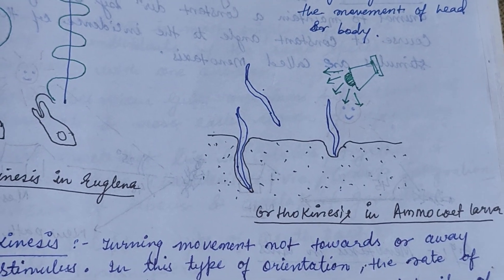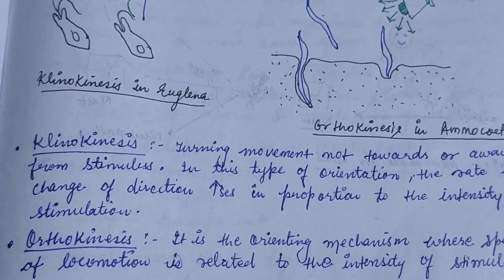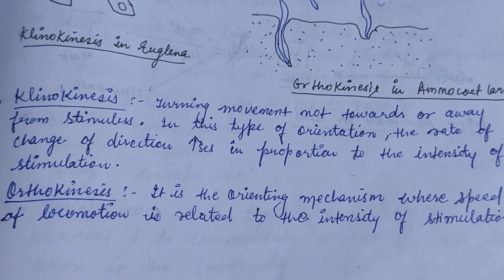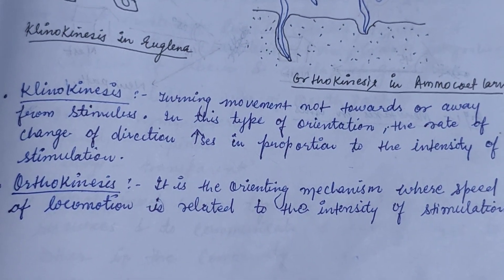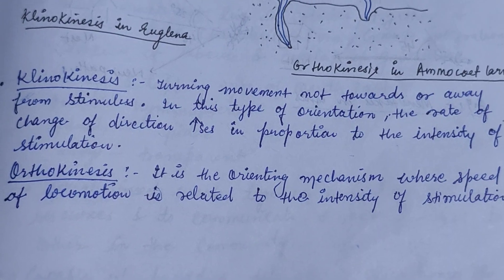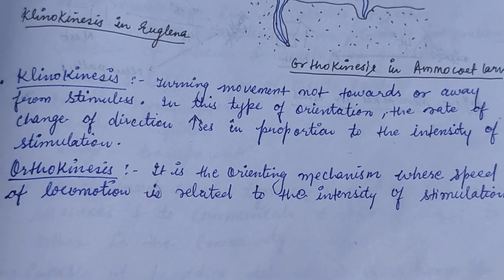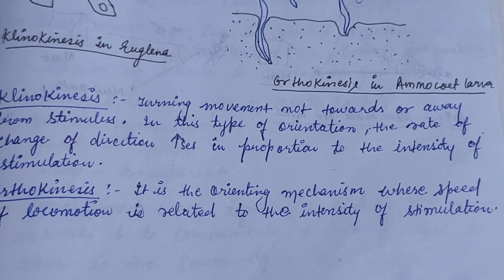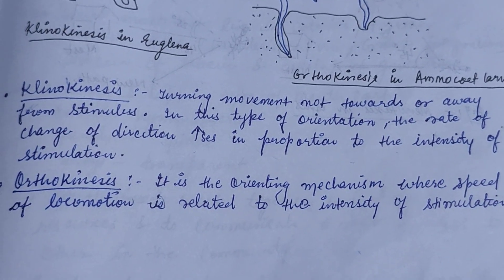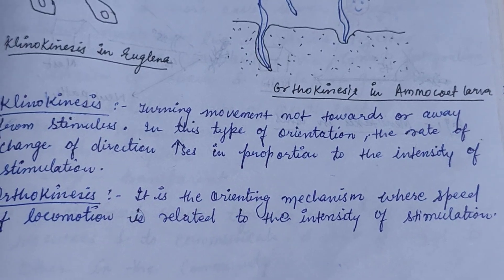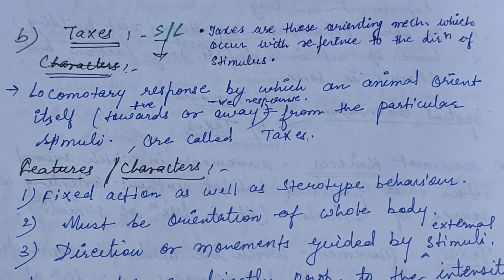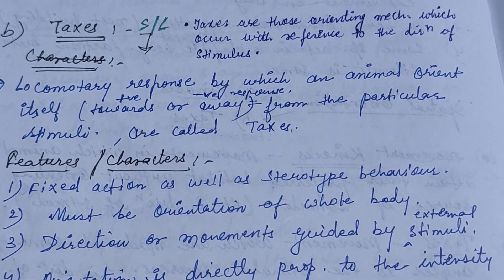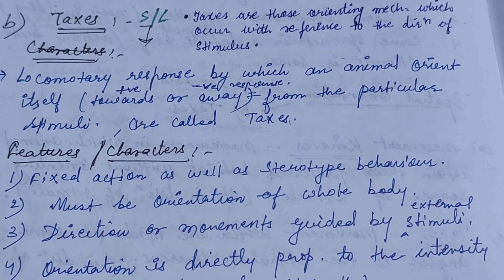Klinokinesis involves turning movement not towards or away from the stimulus; the rate of change of direction increases in proportion to the intensity of stimulation. Orthokinesis is the orienting mechanism where speed of locomotion is related to the intensity of stimulation. Next part is taxis. Taxis may be defined as orienting mechanisms which occur with reference to the direction of the stimulus.